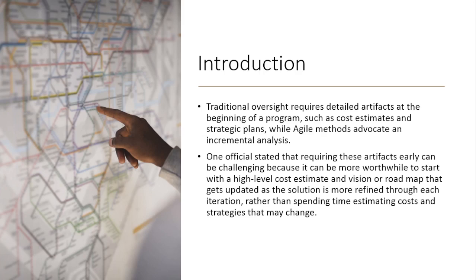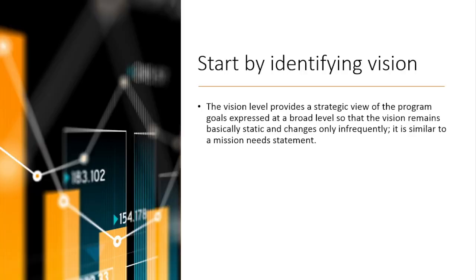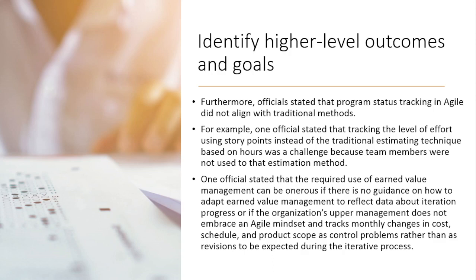How do we roll in the world of Agile? There are certain things you need to understand, and the first one is the value of a vision. In Agile, we espouse the idea of having a solid vision for people to understand where exactly we are going. We start by identifying the vision. The vision level provides a strategic view of the program goals expressed at a broad level so that the vision remains basically static and changes only infrequently. PMI breaks this down in Figure 6-20 of the PMBOK Guide 6th edition.